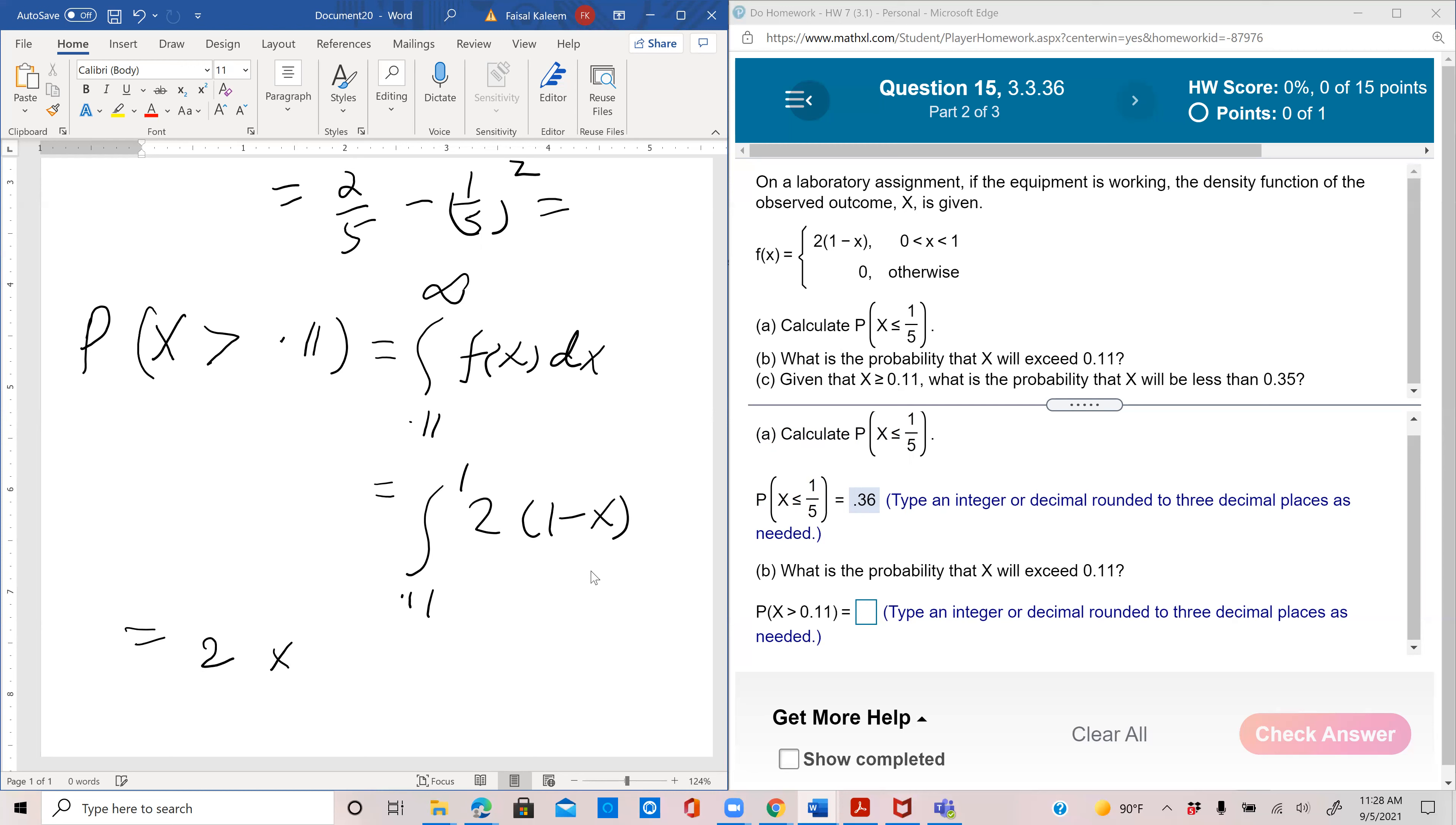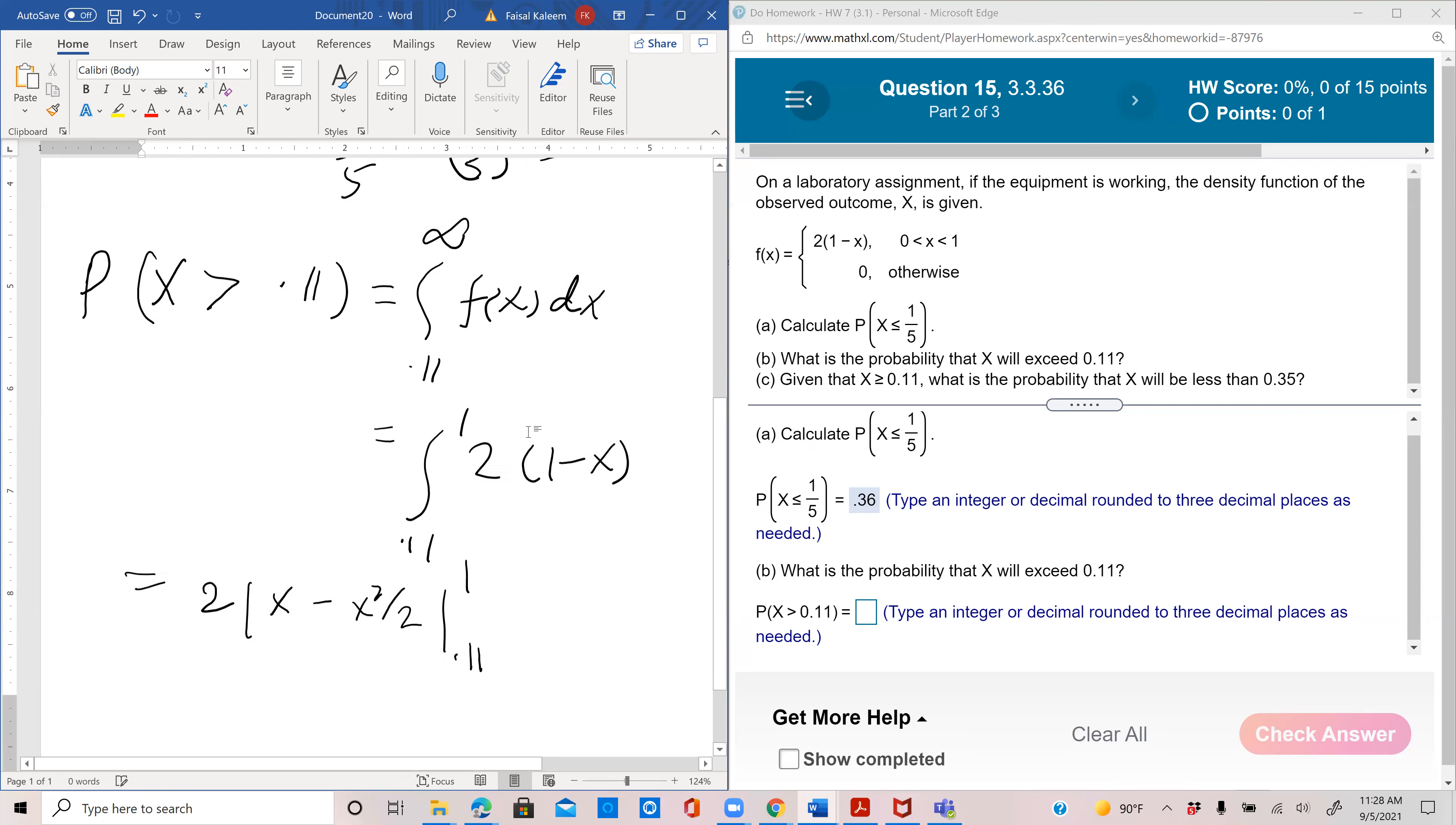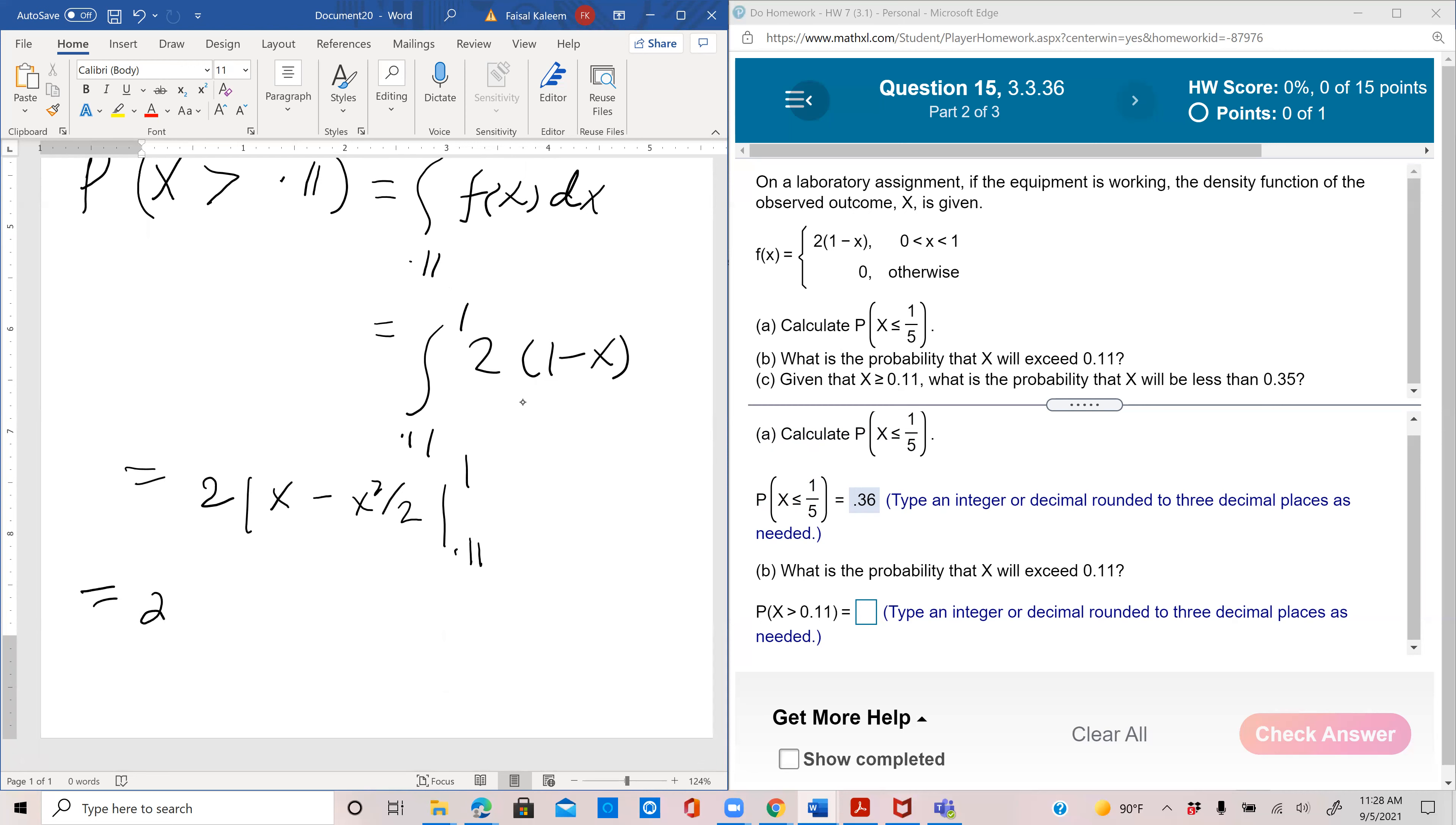x minus x squared by two, 0.11 to one, equals two minus one,